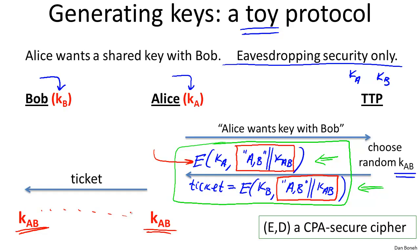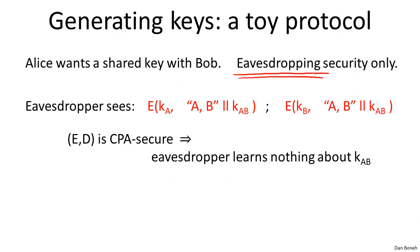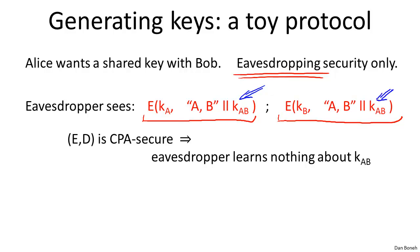The first question is: why is this protocol secure even if we only consider eavesdropping adversaries? An eavesdropper sees these two ciphertexts — the ciphertext encrypted for Alice and the ticket encrypted for Bob. He might see many instances of these messages if Alice and Bob continuously exchange keys. Our goal is to say he has no information about the exchanged key K_AB. This follows directly from the CPA security of the cipher E, because the eavesdropper can't distinguish encryptions of K_AB from encryptions of random junk. As a result, he learns nothing about K_AB.